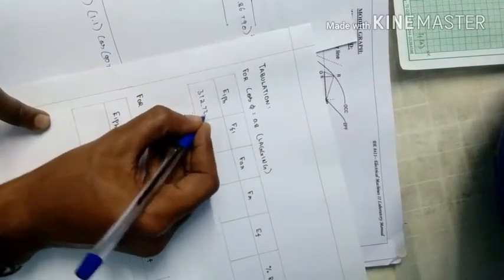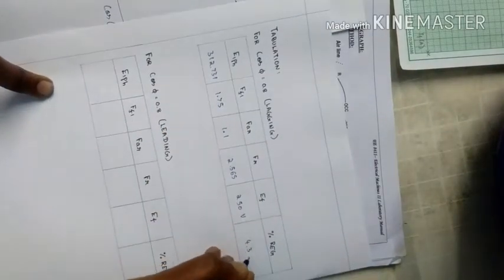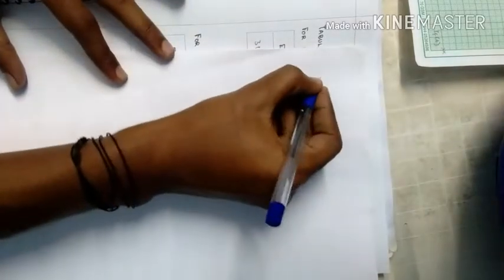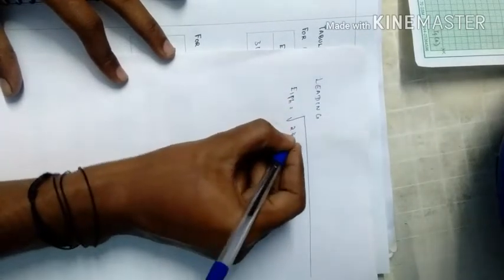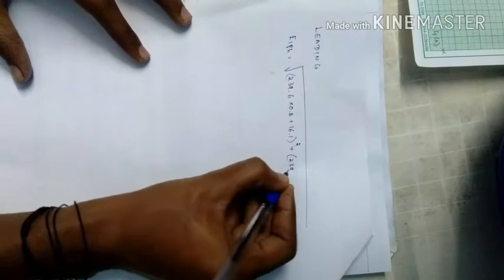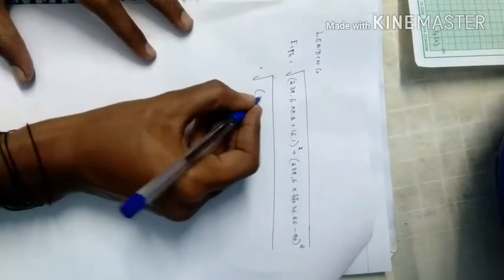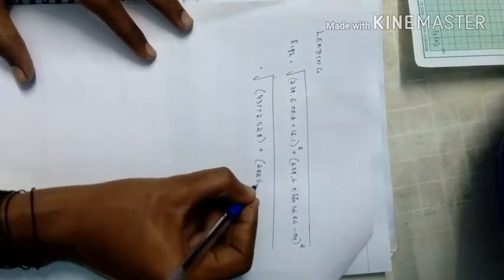For leading, the calculation will be: root of (239.6 times 0.8 plus 16.1) squared plus (239.6 sin 36.86 minus 90) squared. Taking the values, 43,178.86 and calculating will be 28,866.57. Adding these two numbers and taking the root will be 214.61 volts.